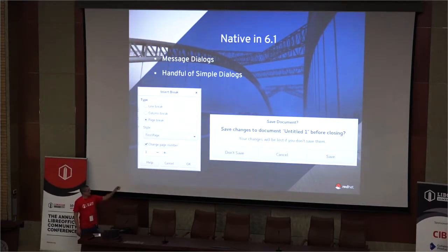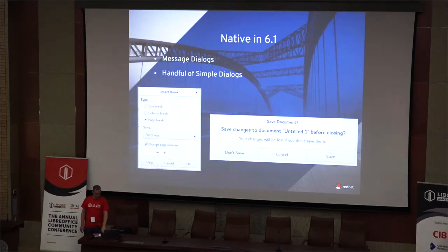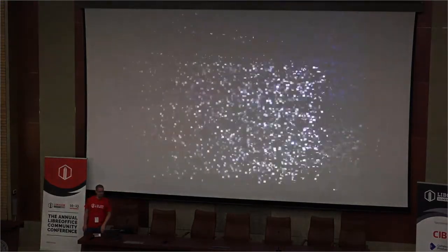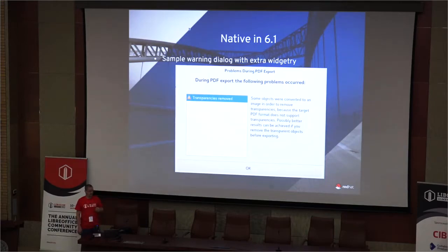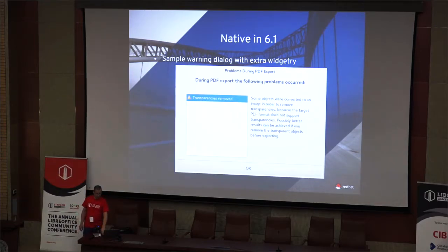What we get here as well is native button ordering: OK on the far right, followed by Cancel on the left, and then Help on the far left after that. Also in 6.1, there's another warning dialog demonstrating that warning dialogs can contain extra widgets inside them as well. This is in the PDF export — if it warns about things, it lists what things are warned in it.